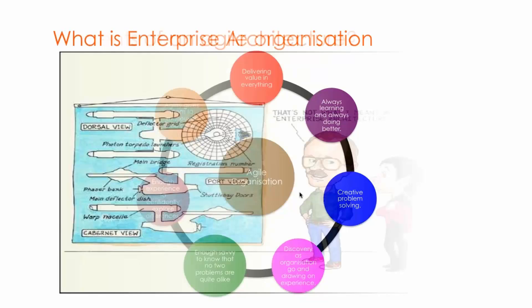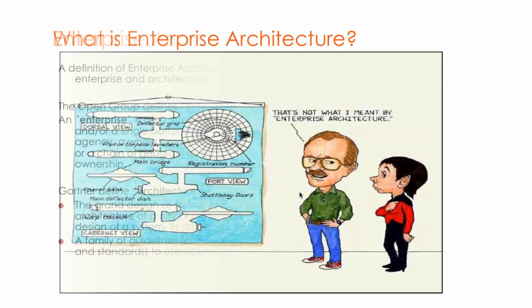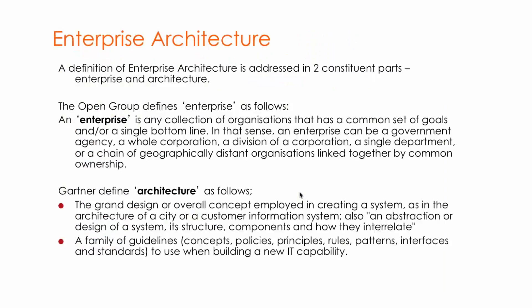What is enterprise architecture? I'm going to address this from two constituent parts — what exactly is an enterprise and what exactly is an architecture. The Open Group defines an enterprise as a collection of organizations that has a common set of goals and a single bottom line. An enterprise can be a government agency, a whole corporation, a division of a corporation, a single department, or a chain of geographically distanced organizations linked together by common ownership.